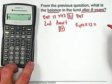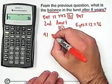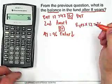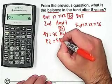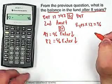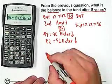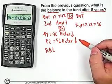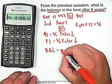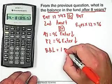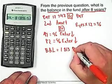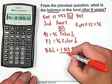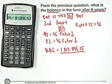Set P1 to 96, enter, down, then set P2 also to 96, enter, and down. All we want is the balance. Let your calculator go for a few seconds — it takes a little bit of time because it's making 96 calculations. The balance in the fund after 96 payments should be $1,813,896.15. This is how much we have in our sinking fund after 8 years.